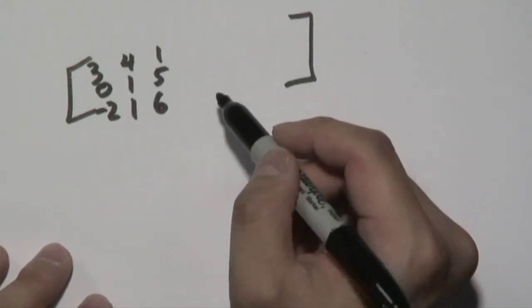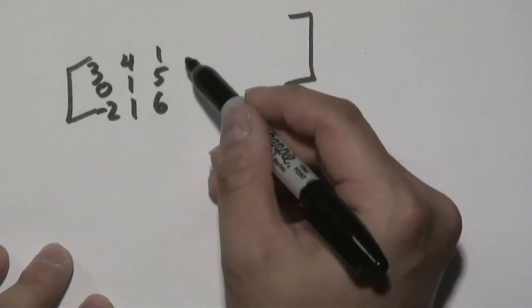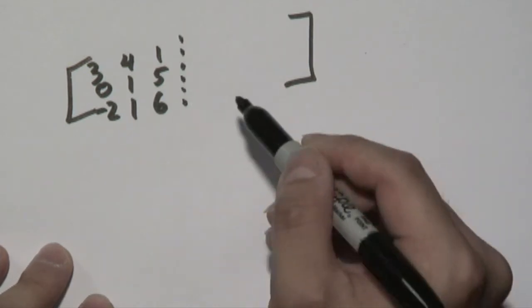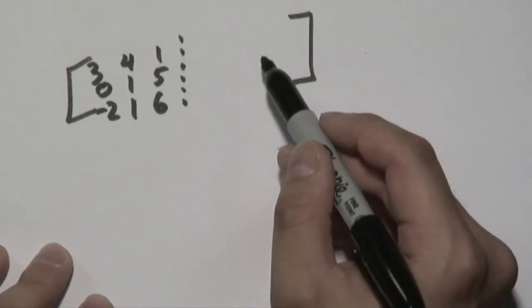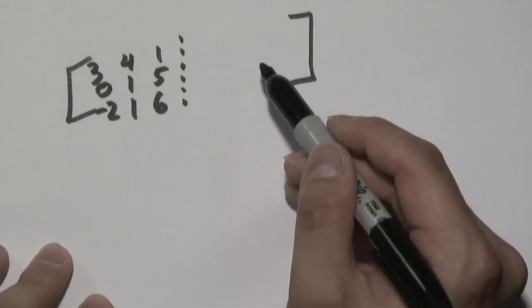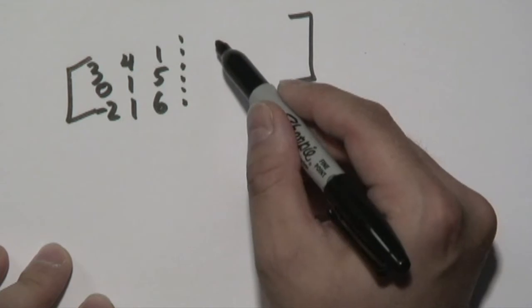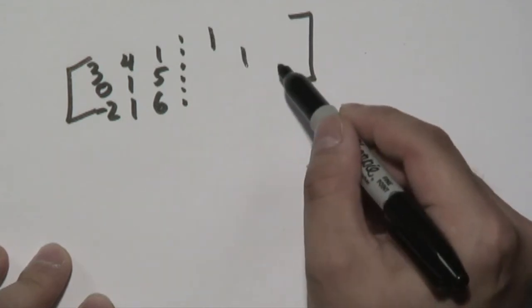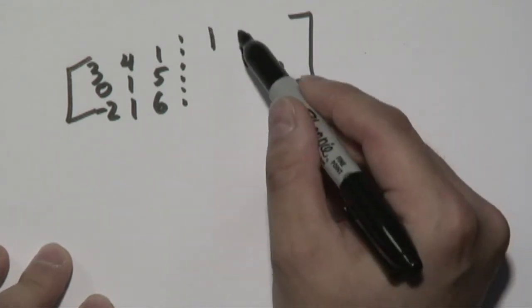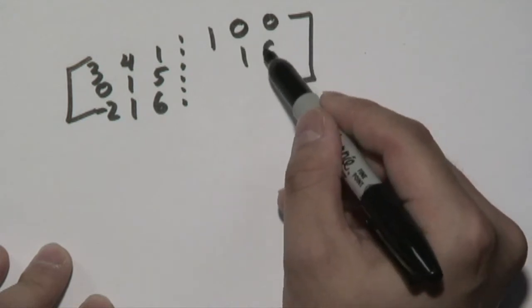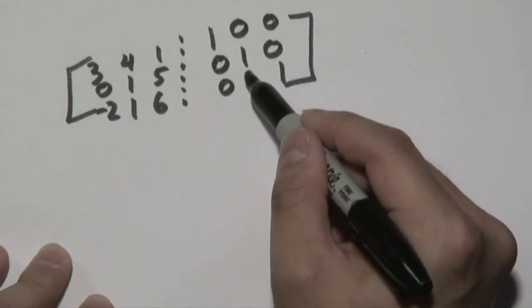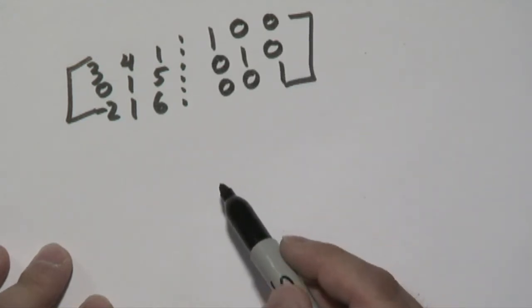For you to find the inverse using this approach, what you want to do is make another 3 by 3, but on this side, it's always going to be the identity matrix. What that means here is in a 3 by 3 setting, you have 1s along the main diagonal and then 0s everywhere else. So that's the initial setup that you have to take.